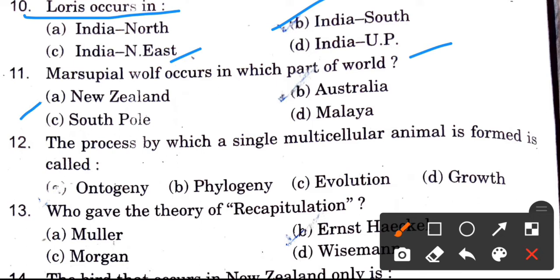Next question: Marsupial wolf occurs in which part of the world? Options are New Zealand, Australia, South Pole, and Malaysia. The answer is Australia. The marsupial wolf is found only in Australia.